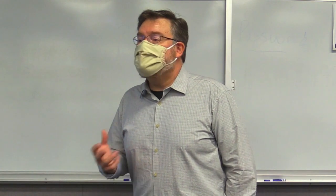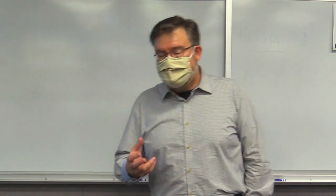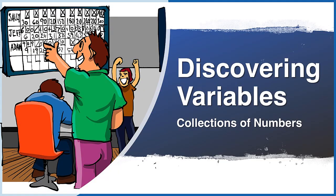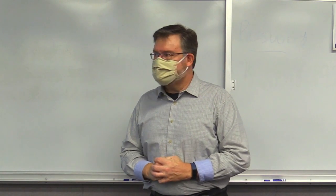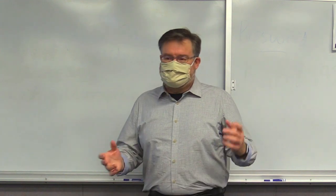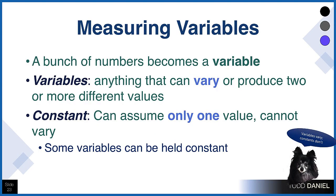That's a lot of information about individual numbers. But what becomes really fun in statistics is when we combine numbers — when we group them. When we create collections of numbers, they become variables. A variable is a bunch of numbers — anytime we collect a grouping of numbers measuring the same thing, we have a variable. A variable is anything that can vary, that can take on more than one value. Think of biometrics — things we can measure about you. Your height, for you personally, is a constant — a constant can assume only one value.